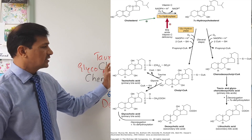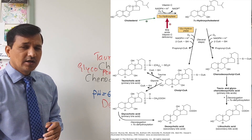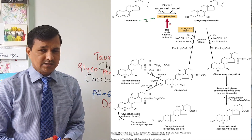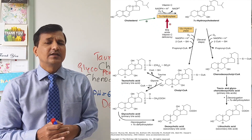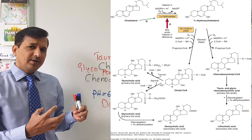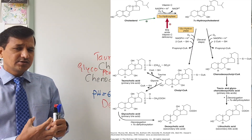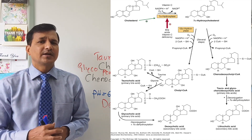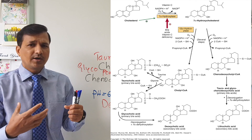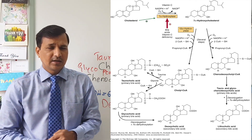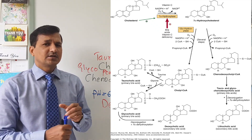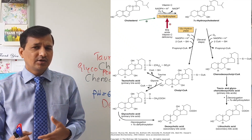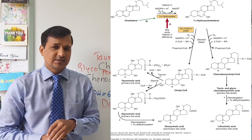Taurocholic acid and glycocholic acid are converted into deoxycholic acid, while taurochenodeoxycholic acid and glycochenodeoxycholic acid are converted into lithocholic acid. Deoxycholic acid and lithocholic acid are the two secondary bile acids. The primary bile acids not converted, along with the secondary bile acids, are absorbed at the terminal ileum. About 95% of bile acids are reabsorbed back into hepatocytes via enterohepatic circulation and returned to the duodenum. Only 5% are excreted in feces, mostly as lithocholic acid.